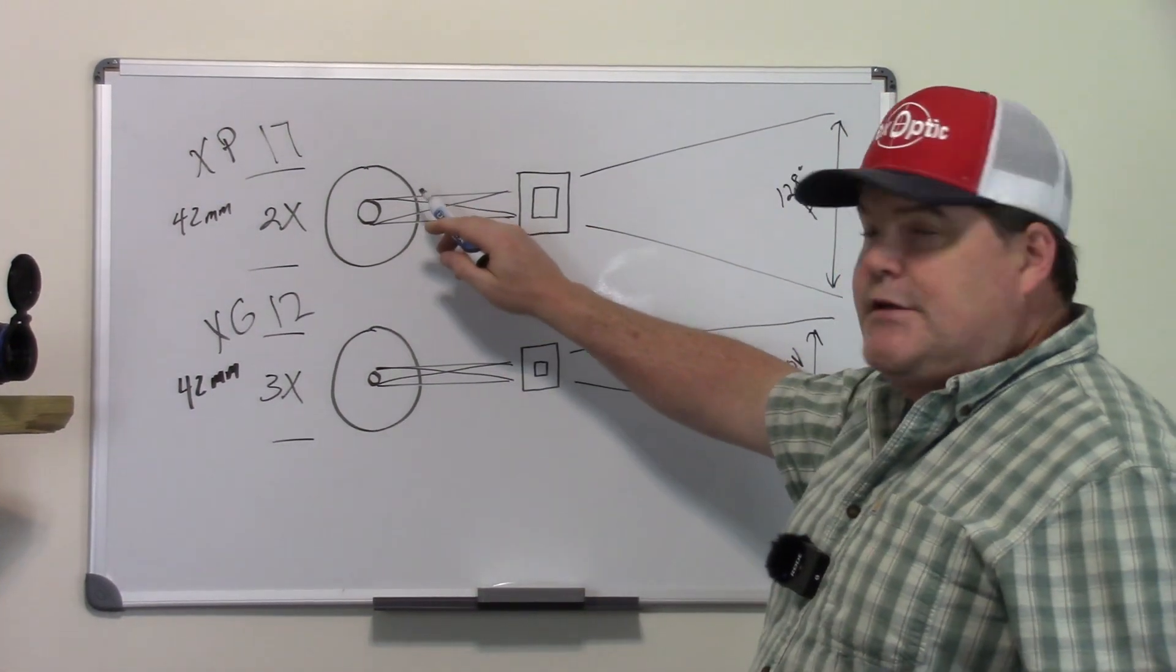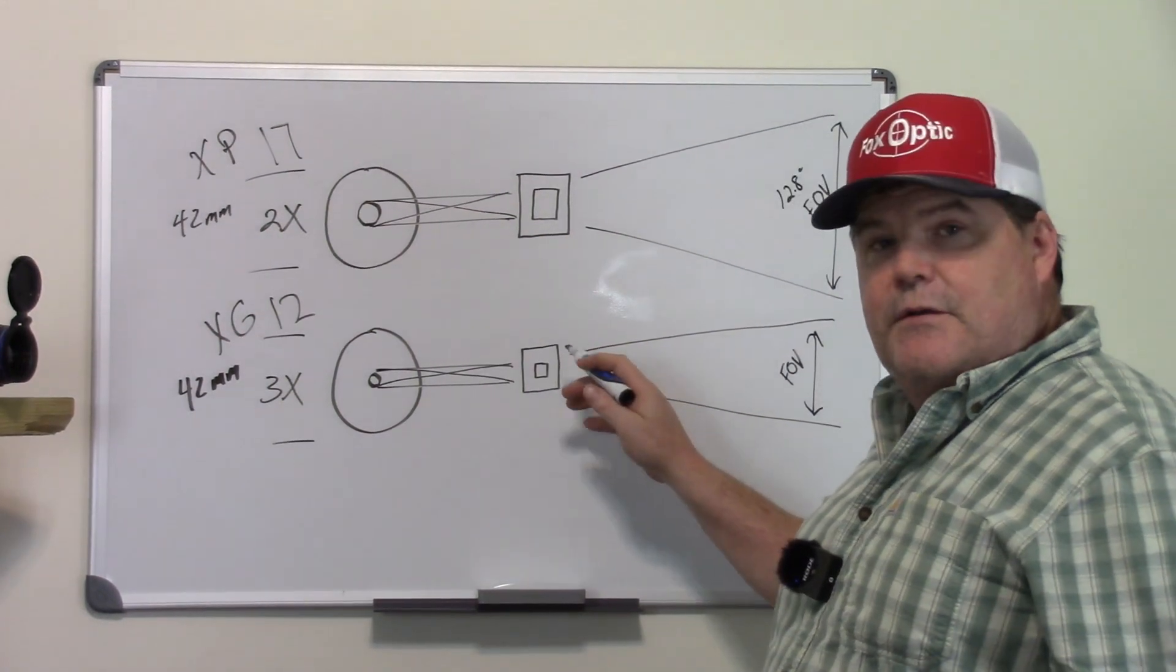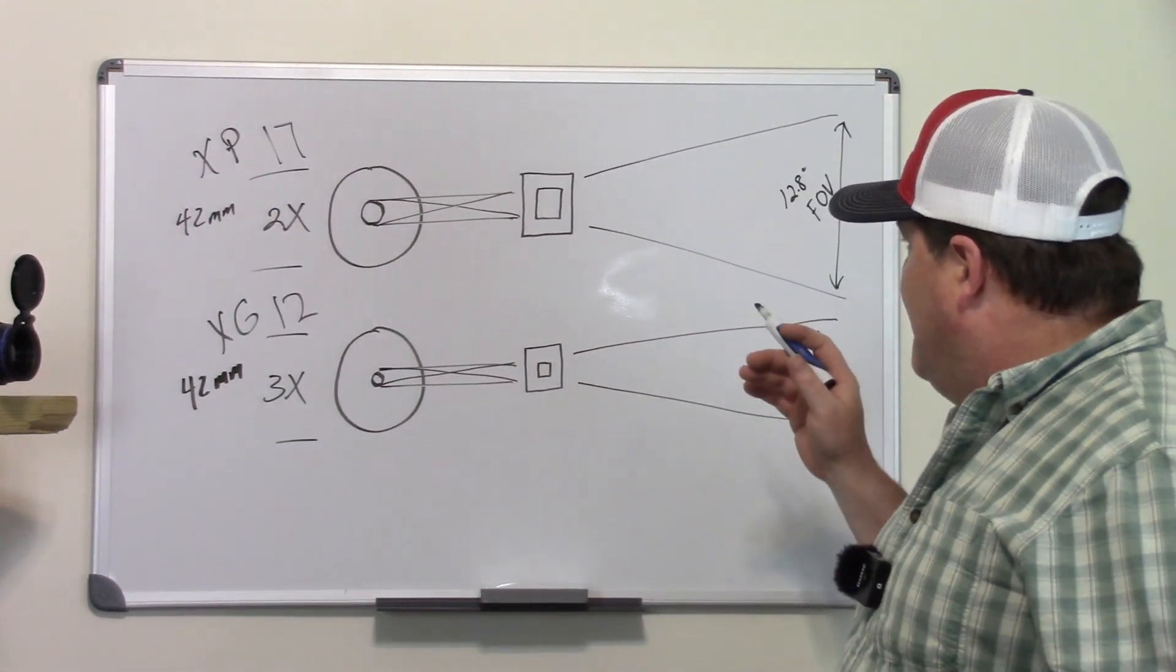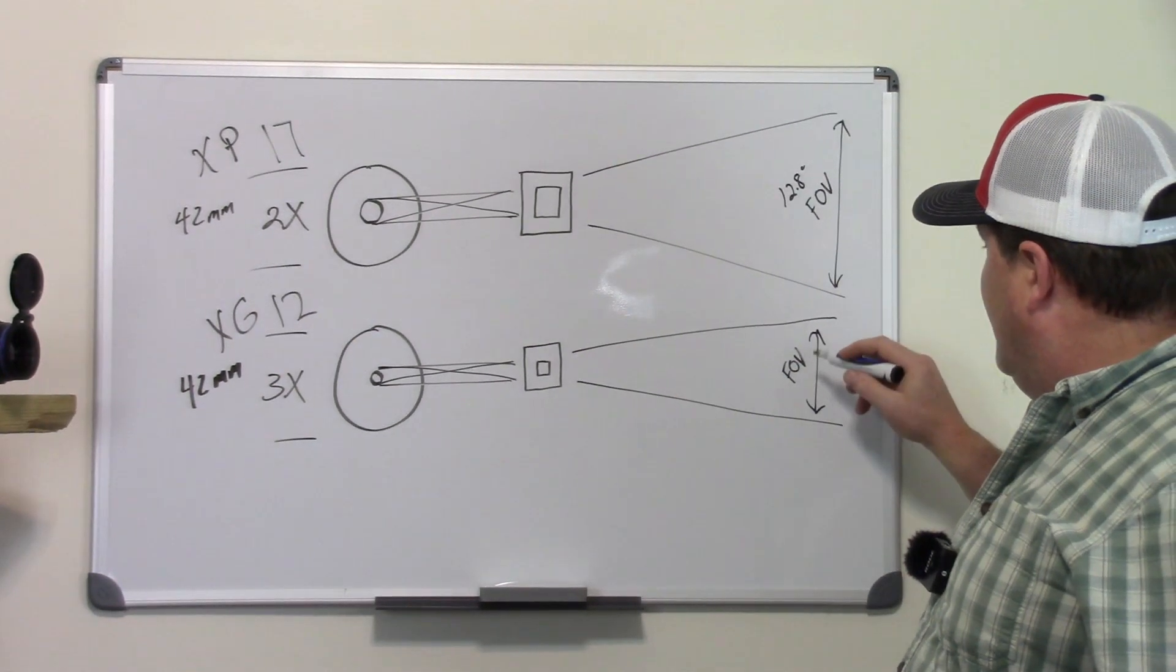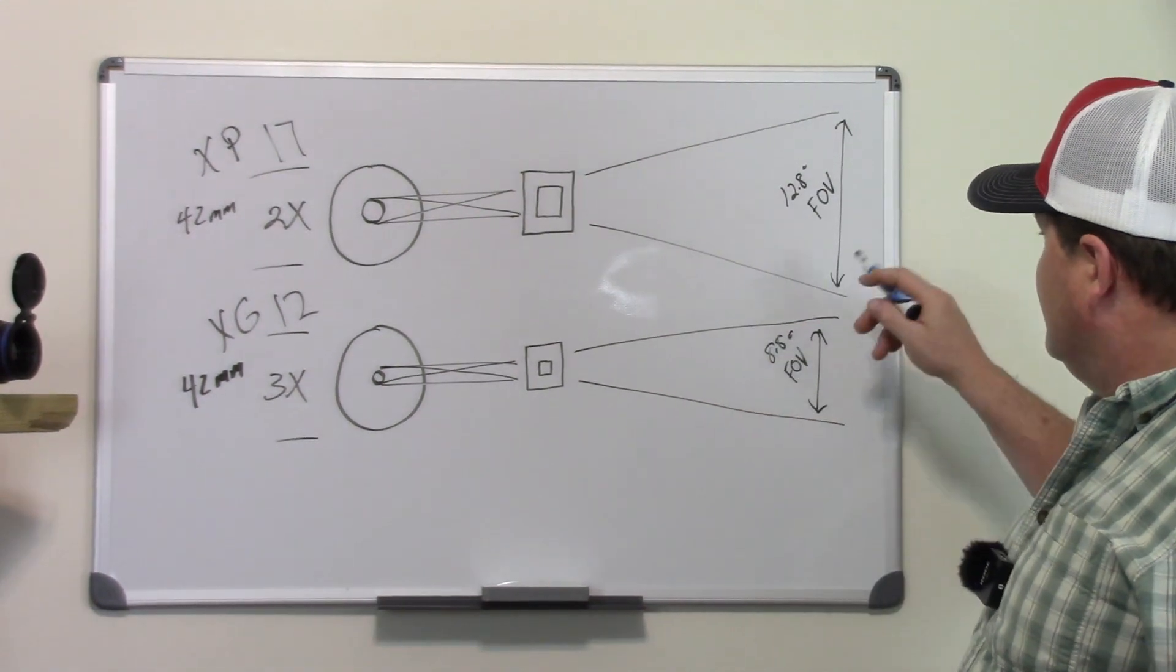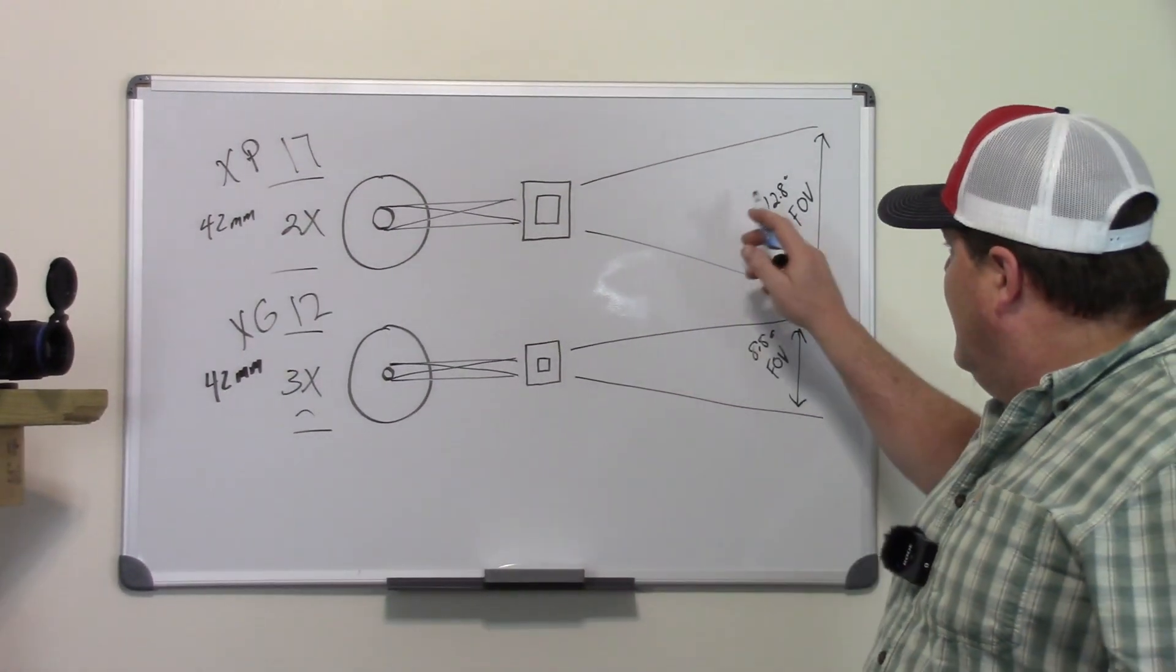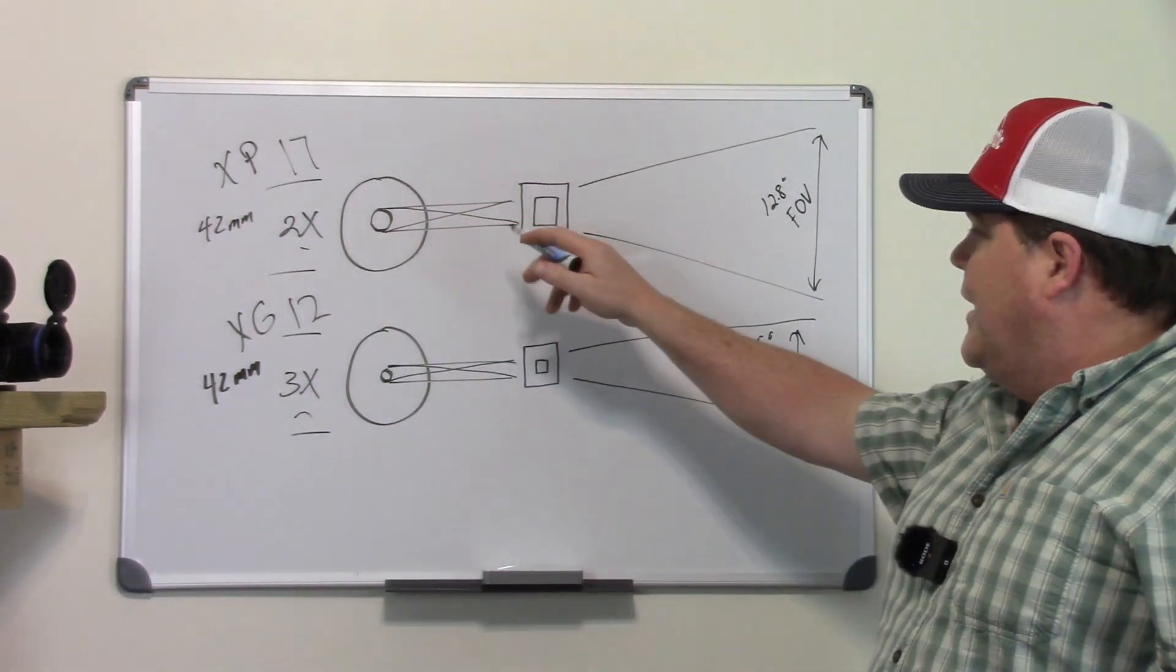So they've either got to increase the diameter of the lens itself or decrease the physical size of the sensor, which is what they're doing in the 12 micron BAE sensor. So that's also going to affect on the other end here, it's going to affect your field of view. I think this is 8.8 on the XG. So you're going to get a narrower field of view in the XG which is a product of the 3x magnification. You're going to get a little wider field of view obviously on the 2x coming out of the XP 50.